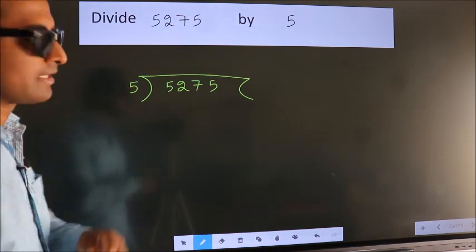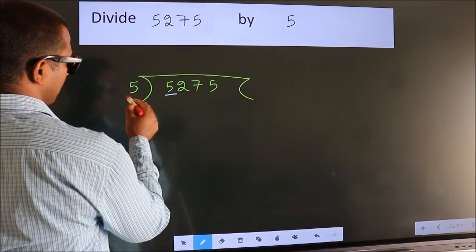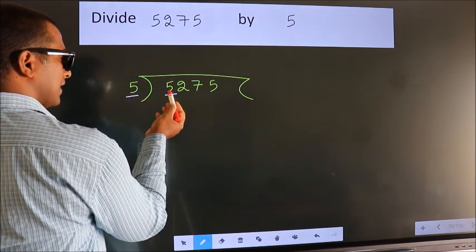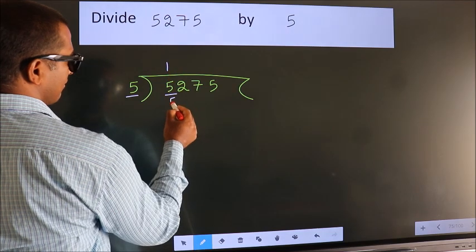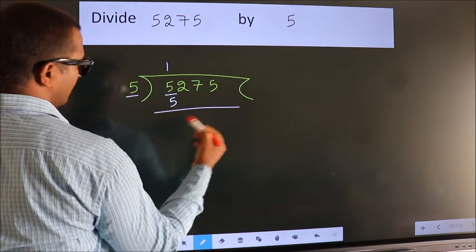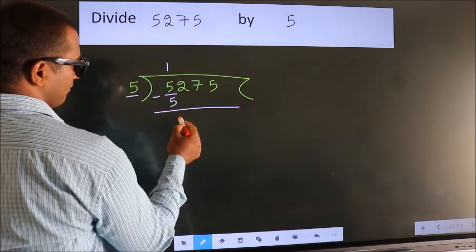Next, here we have 5, here 5. When do we get 5? In the 5 table, 5 once is 5. Now we subtract and get 0.